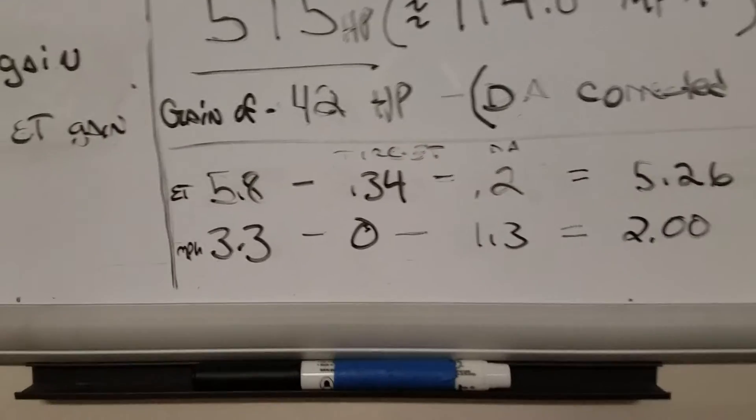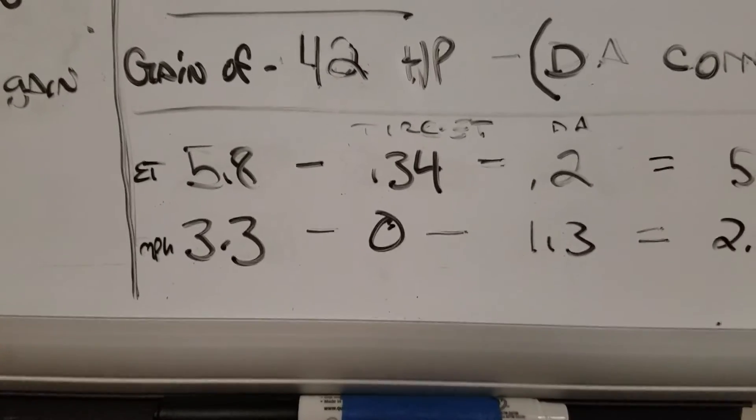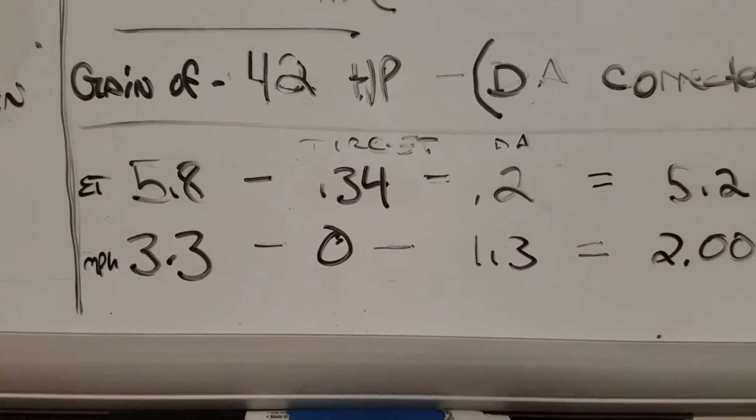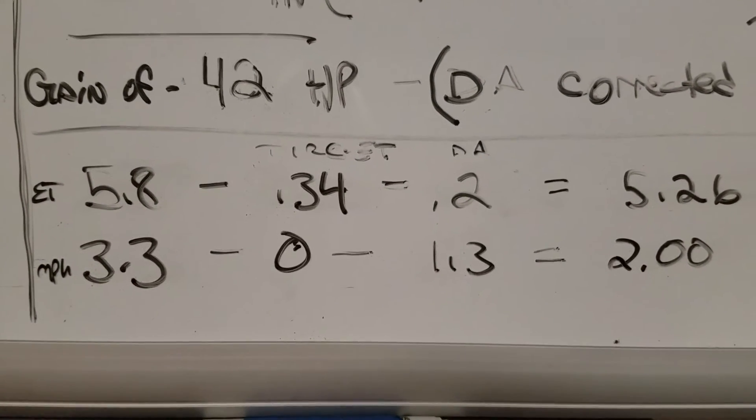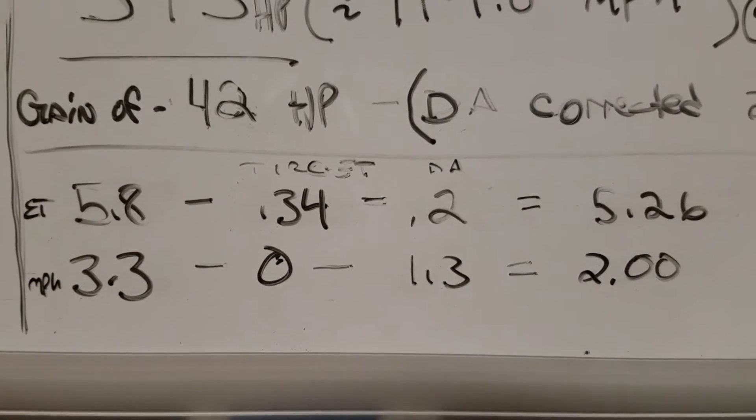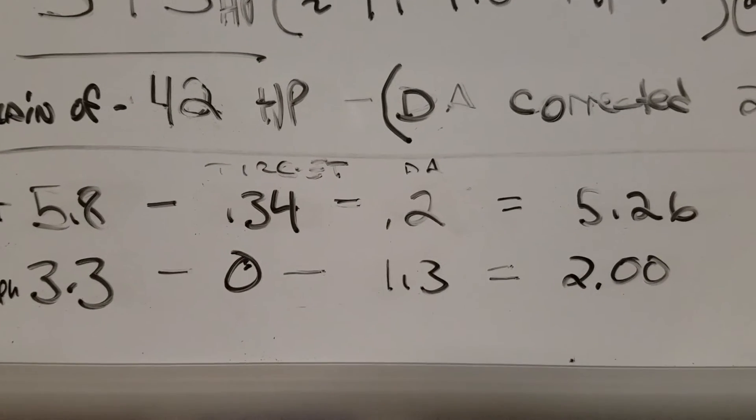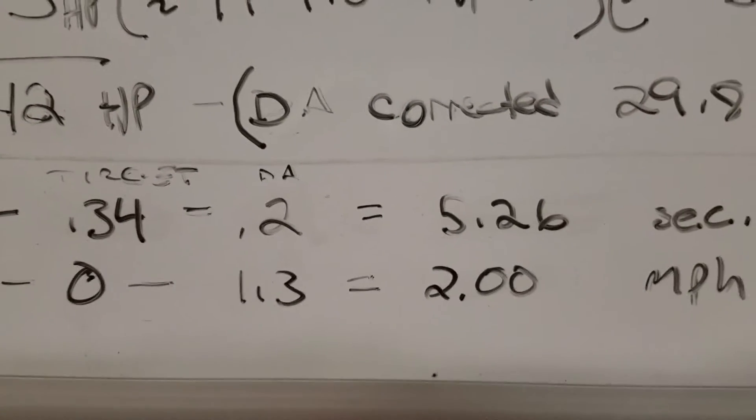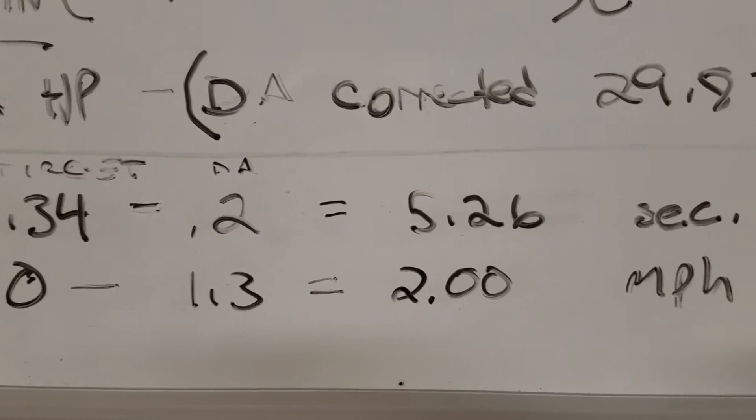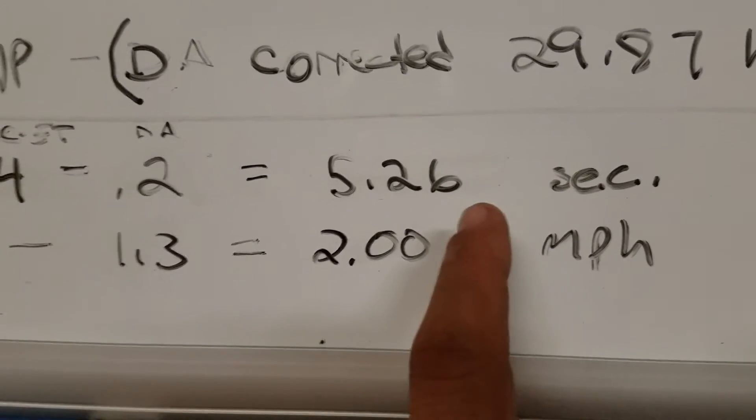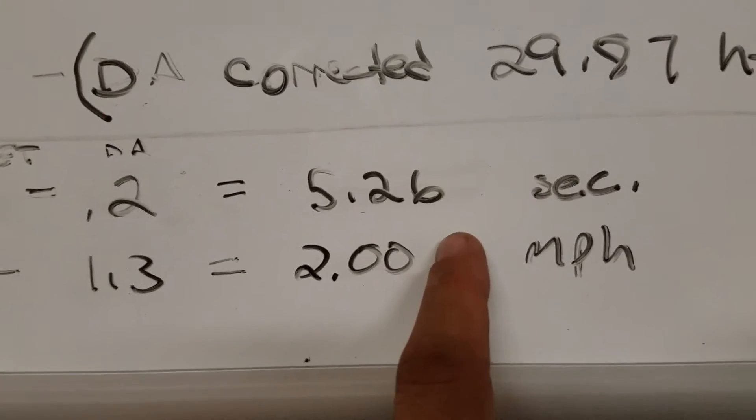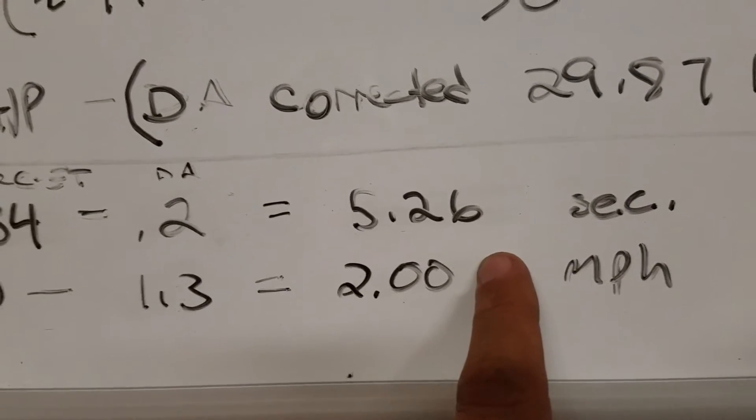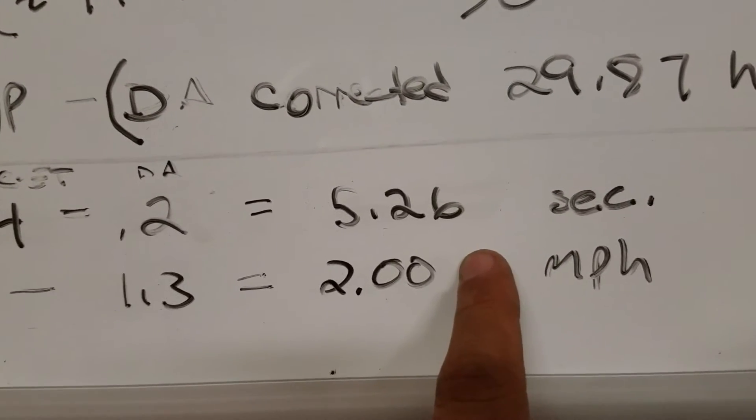So what's the final analysis on this? Well, we're going to take that 5.8 tenth increase. We're going to whittle away a little bit just based on the 60 foot times it was running with the stock tires. 3.4 away from that. DA, we're going to take about two, a couple of tenths away for that. So it's going to give us a 5.26 tenth of a second improvement corrected.